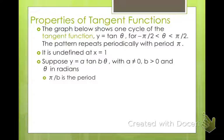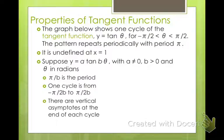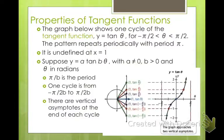π over b is your period. So it's always π over whatever your value of b is. One cycle is from negative π over 2b to π over 2b. And there are vertical asymptotes at the end of each cycle. So wherever you find out your first cycle, from the beginning of your cycle to the end of your cycle, those are both asymptotes. So then you can draw them as asymptotes.